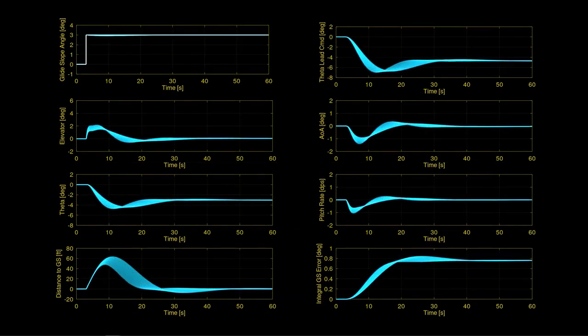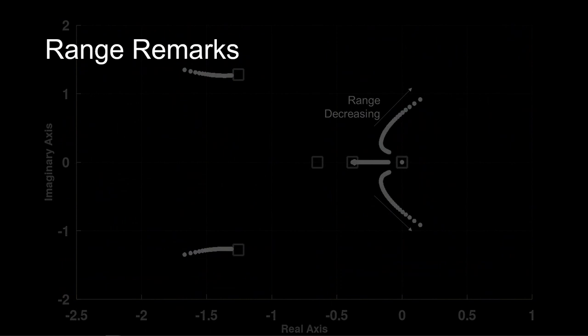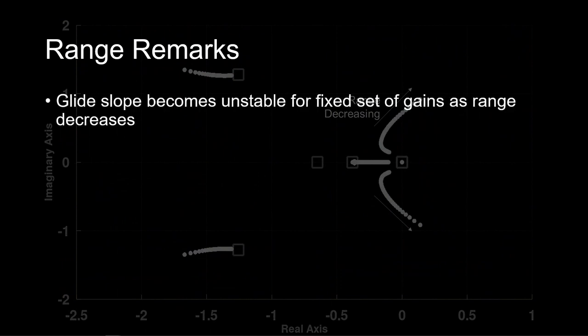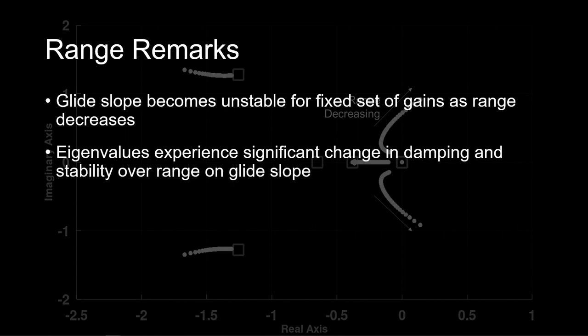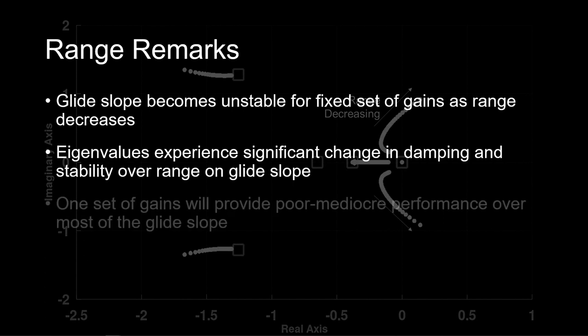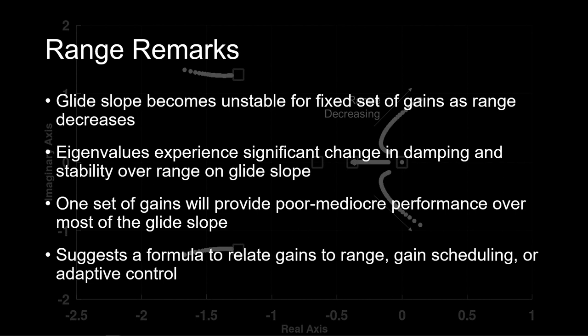We observe the buildup of oscillation as all signals diverge in the time domain. Range is a parameter in the closed-loop glide slope controller. As range decreases, closed-loop stability decreases because the smaller range amplifies the glide slope error. Only over short ranges will a single set of gains provide satisfactory performance. Over longer ranges like that considered here, glide slope coupler gains must decrease with range.